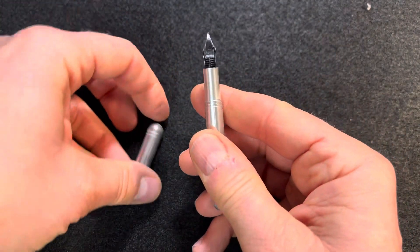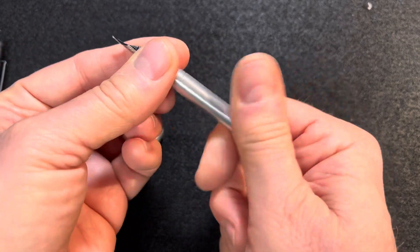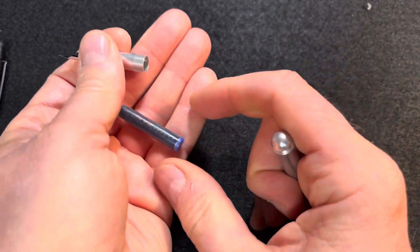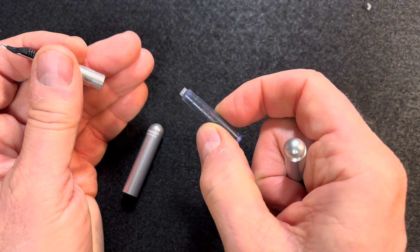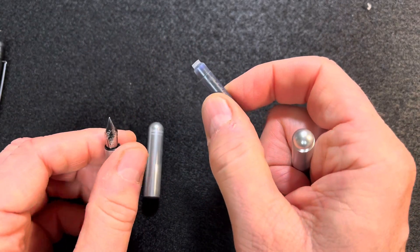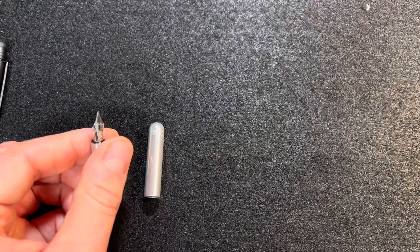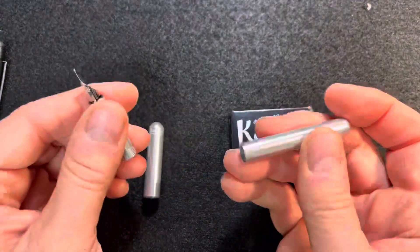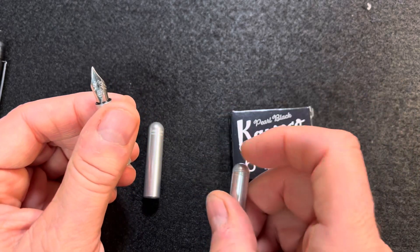It takes the short cartridge, international shorts, came with one in blue ink. But I have blue ink in another fountain pen so I'm going to put in some pearl black ink. So let's get that done.